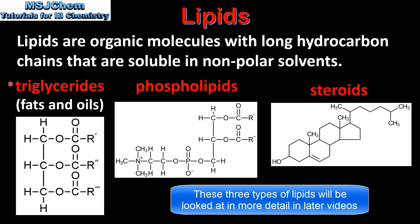The three types of lipids are triglycerides, which are fats and oils, phospholipids and steroids. Here we have the structure of a triglyceride, a phospholipid and a steroid. They are characterized by having long hydrocarbon chains and they are hydrophobic, which means they are insoluble in water.